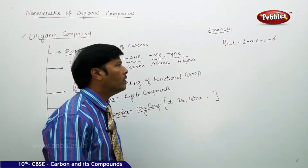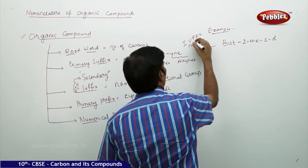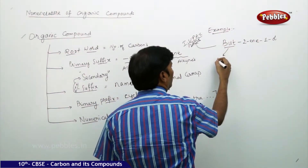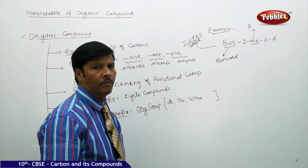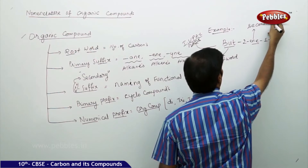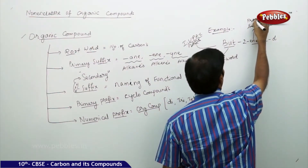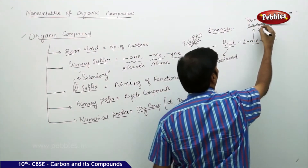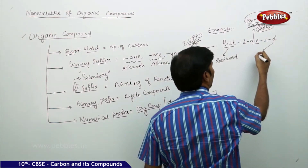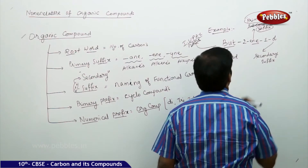Suppose you are taking one organic compound which has the IUPAC name 'but-2-en-1-ol'. So here the word 'but' stands for the root word. 'En' is the primary suffix, not secondary — it is the primary suffix.